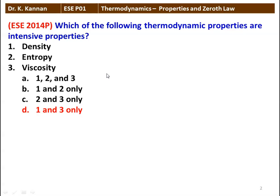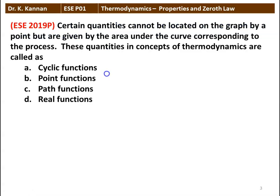The second question: certain quantities cannot be located on a graph by a point, but are given by the area under the curve corresponding to the process. These quantities in thermodynamics are called cyclic function, point function, path function, or real function. The answer is path function. The quantities which cannot be located on a graph are represented by the area under the corresponding curve of a particular process. The path functions are heat and work in thermodynamics.